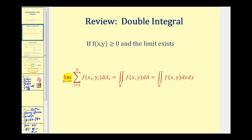The limit as n approaches infinity of the infinite sum of f(x, y) times delta A represents the double integral over the region R of f(x, y) with respect to A. This delta A represents a small change in area, giving us the differential dA, which can be expressed as dx dy or dy dx — a small change in x times a small change in y, resulting in the same small change of area.